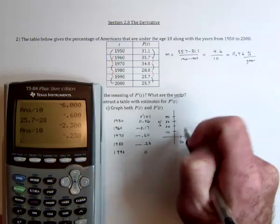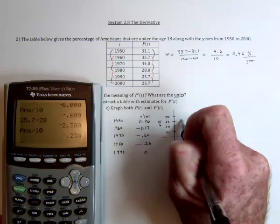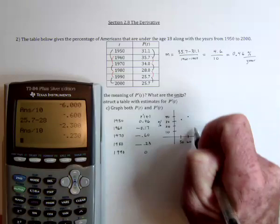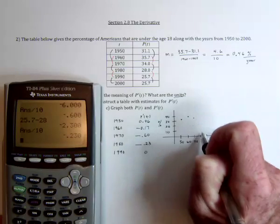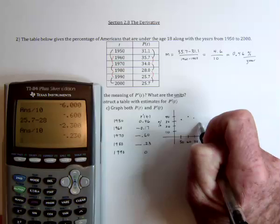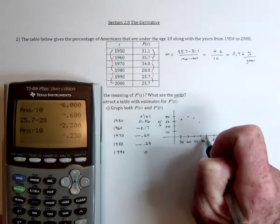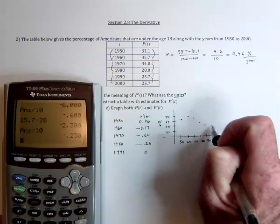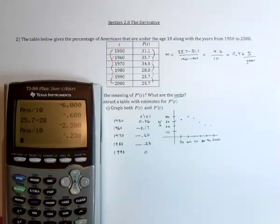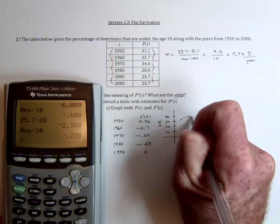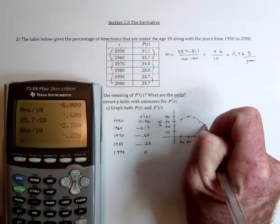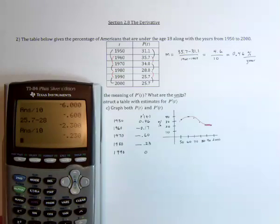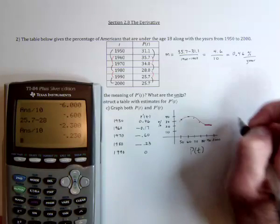So in the 50s, it was 31.1, and then 35.7, and 34, and then 28, 25.7, and 25.7. So until the very end, it was looking sort of like a parabola and then leveled off. So that's the P.